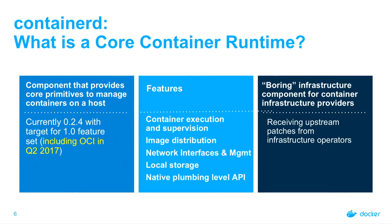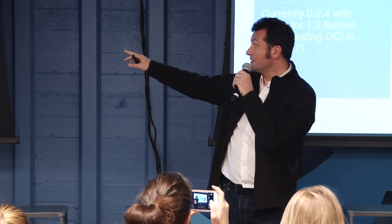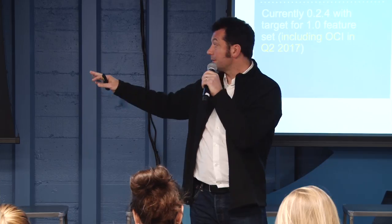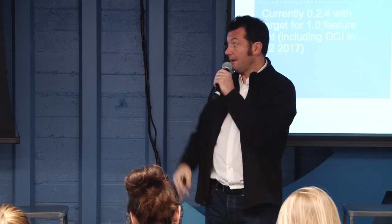What is a core container runtime? ContainerD is a project that already exists — it's been used since Docker 1.11 to provide execution services and execute containers. What we're announcing is a roadmap and a new API for ContainerD to provide container execution and supervision, image distribution, network interface management, local storage, and a low-level gRPC API that higher-level systems can use to embed ContainerD within them. Docker is going to use ContainerD as its core runtime, and other projects like Kubernetes or Mesos can do the same.